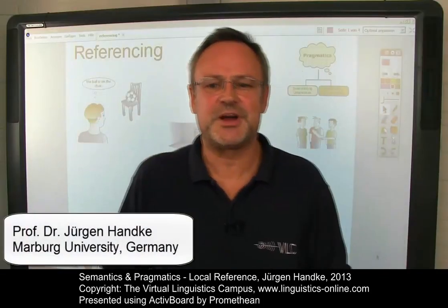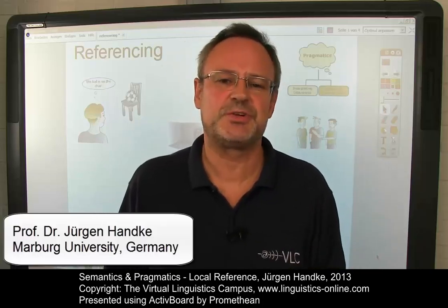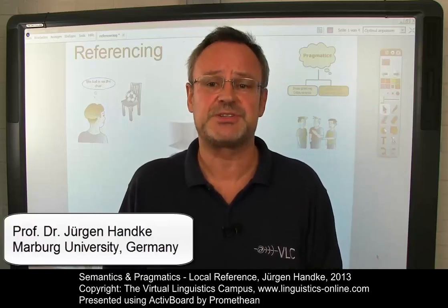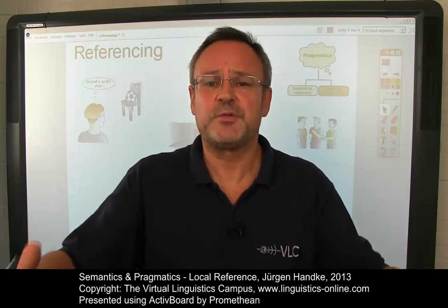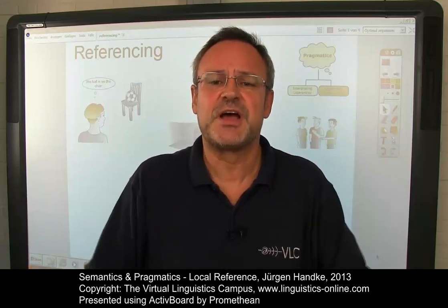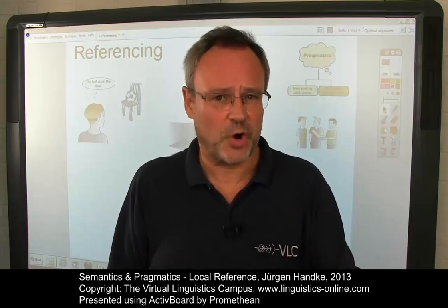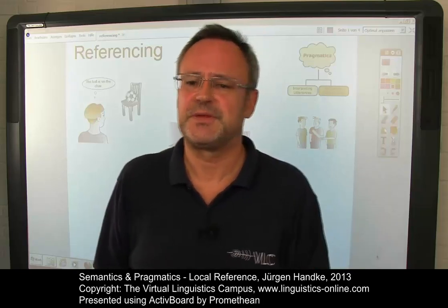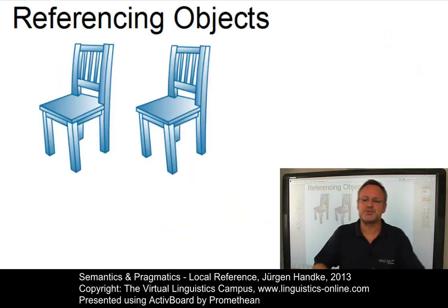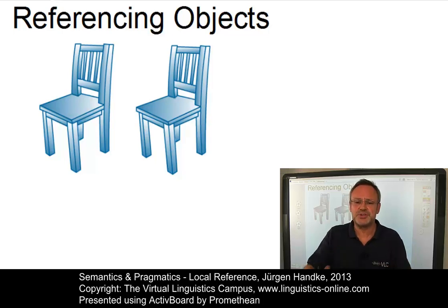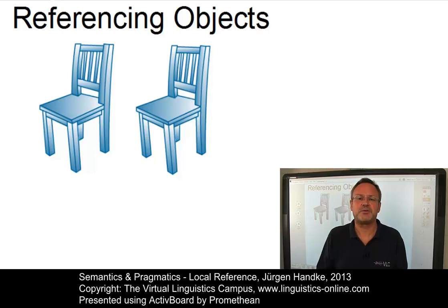Hi. In this short e-lecture I would like to discuss one central question of referencing objects — the question of local reference, or in other words, how we reference an object in space. There are several options of defining the position of an object in space or the position of an object with regard to another one. These ways are referred to as local reference.